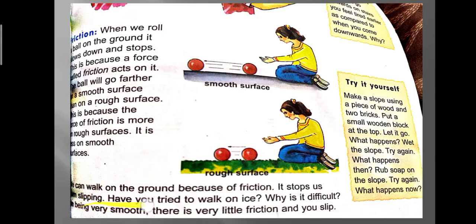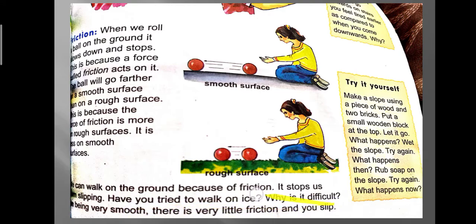We can walk on the ground because of friction — it stops us from slipping. Have you tried to walk on ice? It is very difficult because ice is very smooth, so there is very little friction and you slip and fall.